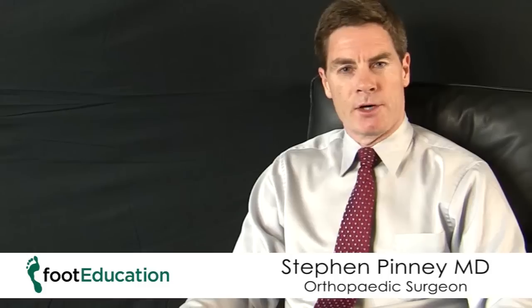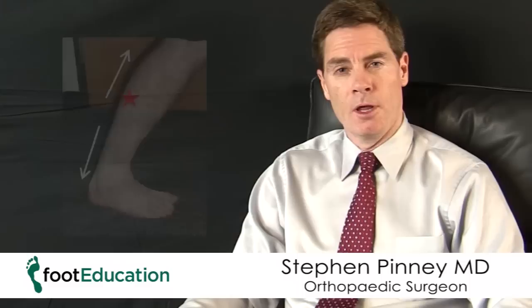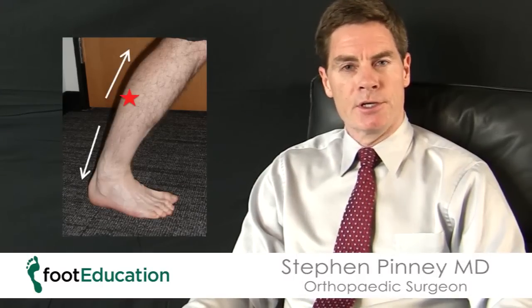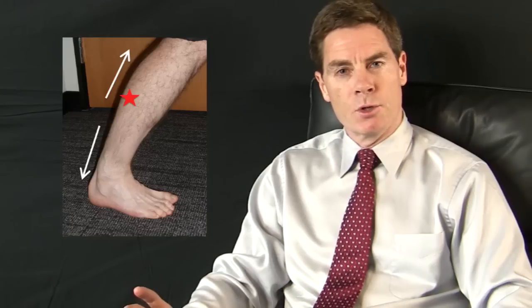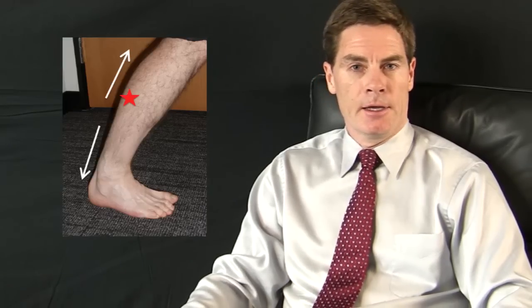What causes a calf tear? Typically a calf tear will occur when there's a sudden change of direction, often in a sporting activity such as tennis or basketball. This motion predisposes to a calf tear because the calf is contracting but also lengthening at the same time. This creates a tremendous internal force within the muscle, predisposing it to tearing.